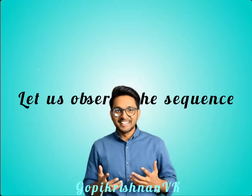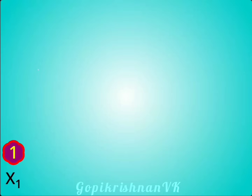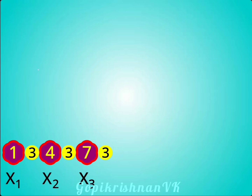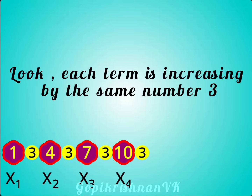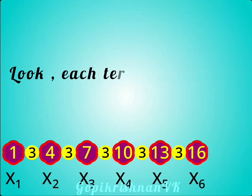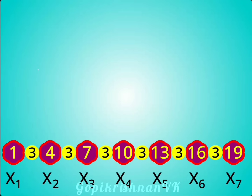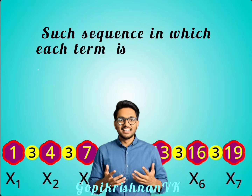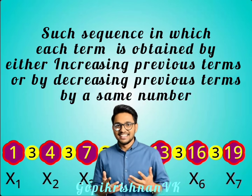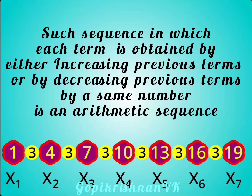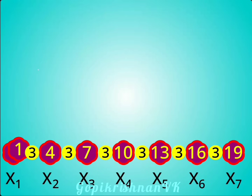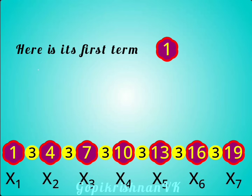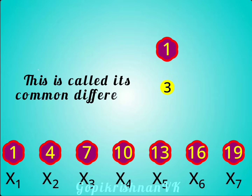Let us observe the sequence. Look, each term is increasing by the same number 3. Such a sequence in which each term is obtained by either increasing or decreasing the previous term by a same number is an arithmetic sequence. Here is its first term, and this is called its common difference.